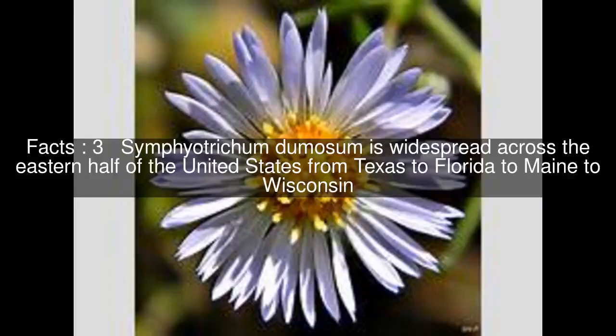Symphyotricum dumasum is widespread across the eastern half of the United States from Texas to Florida to Maine to Wisconsin. It is also known from New Brunswick and Ontario, and is cultivated in other places.